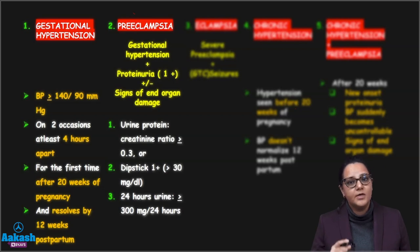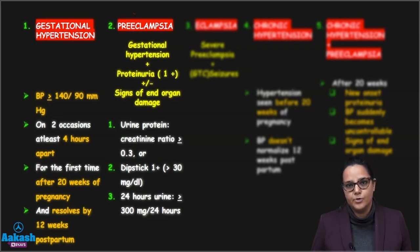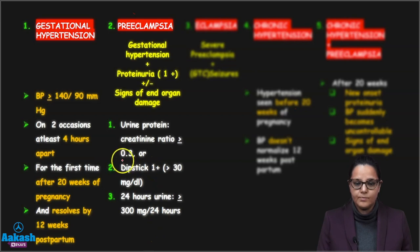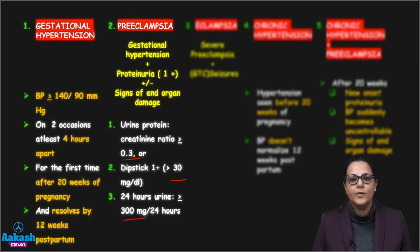Second is preeclampsia. Preeclampsia is all the features of gestational hypertension but now the patient will also have presence of protein in urine. The patient can also have signs of end organ damage. The parameters for proteinuria: urine protein-to-creatinine ratio more than 0.3, a dipstick value of 1+ which corresponds to more than 30 mg/dL of protein, and a 24-hour urine sample which shows 300 mg of protein in urine.